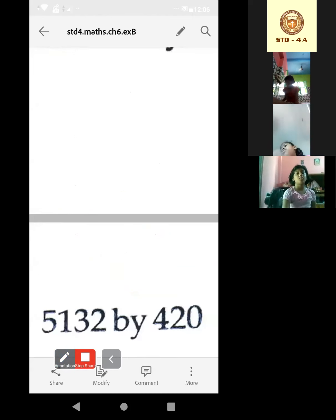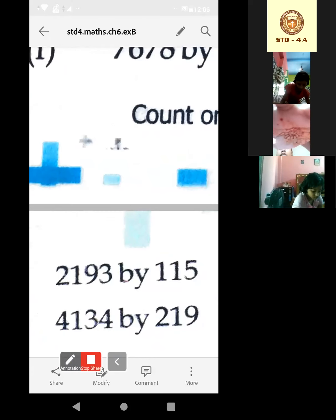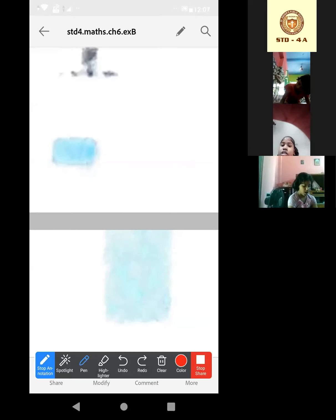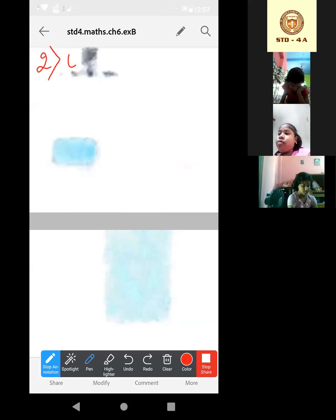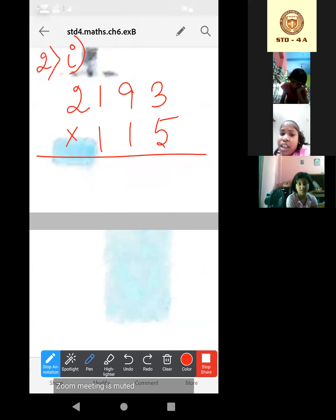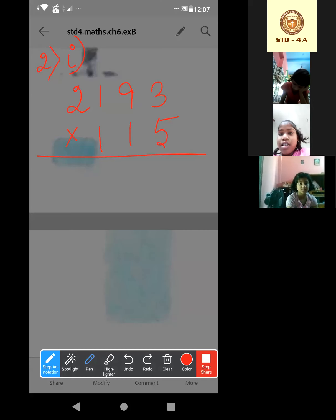Look at this. This one. This one is the I. 2193, that means 2193 multiplied by 115. Right? So I am doing this one. 2193 multiplied by 115.